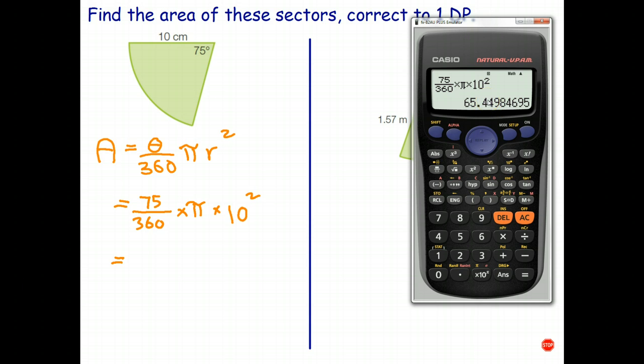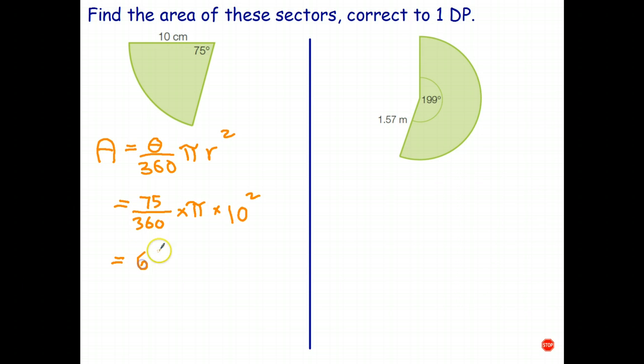Correct to one decimal place is what it says here, so that's going to be 65.4. Looking at that number there it's less than five so the four stays, so 65.4.